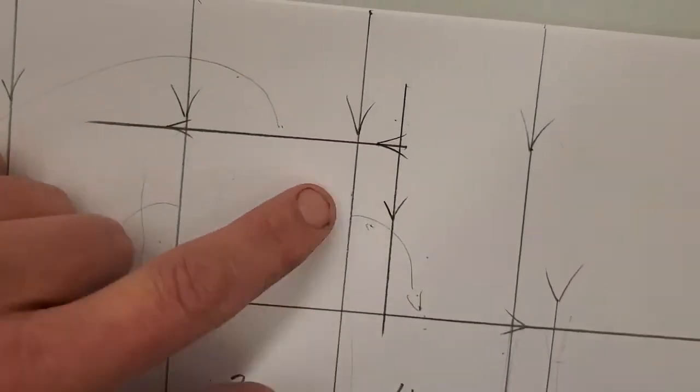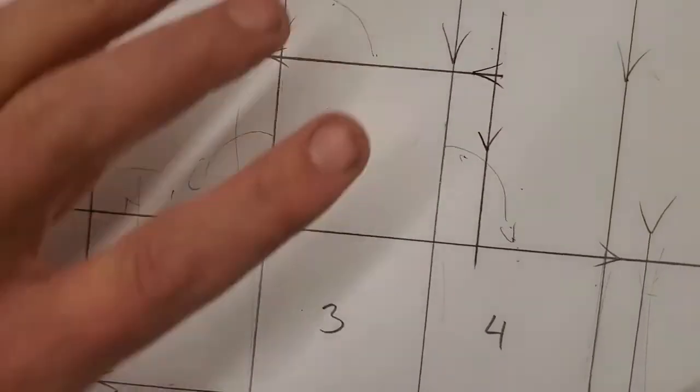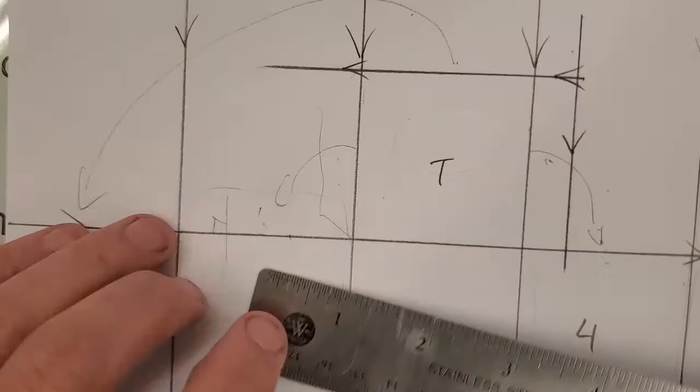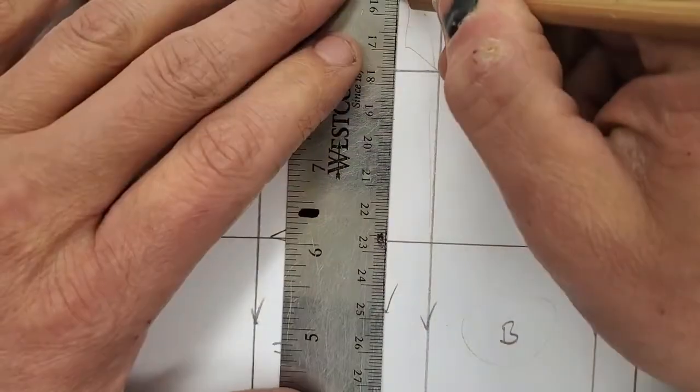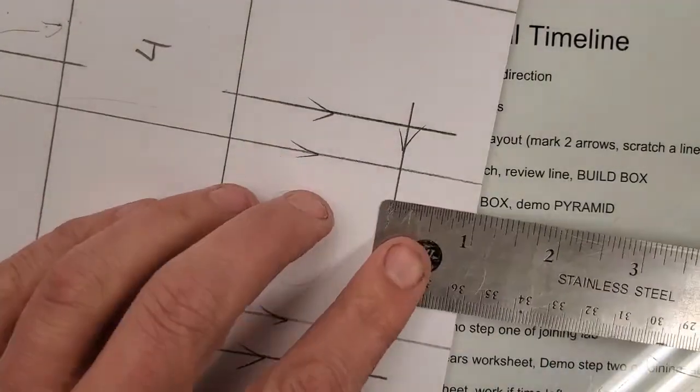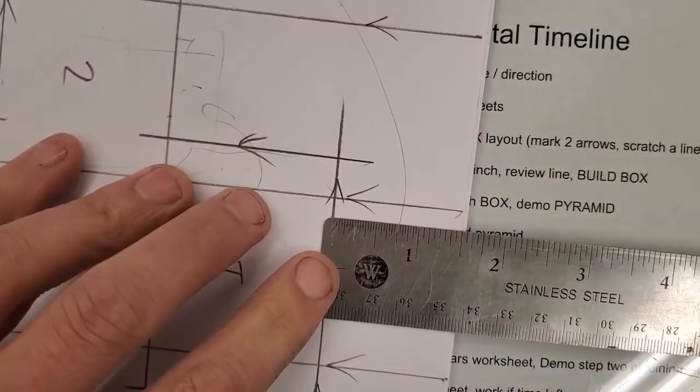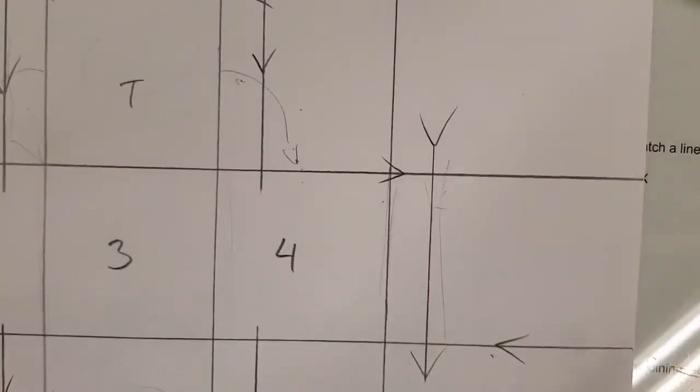So we've got that one and that one. We can do the same thing on this side and then the top and the bottom. So let's do that real quick. Okay, so we've got three rectangles there, three there, one over here.